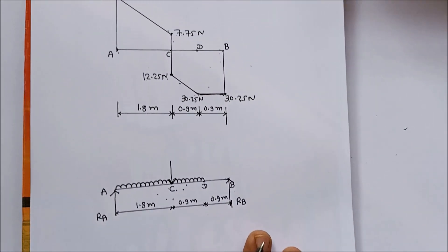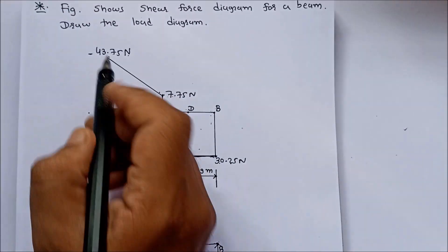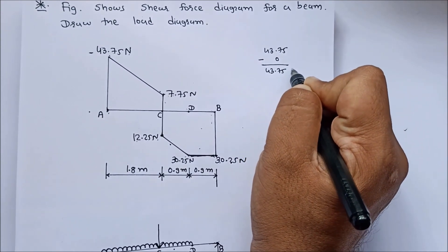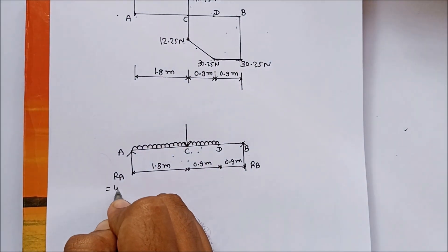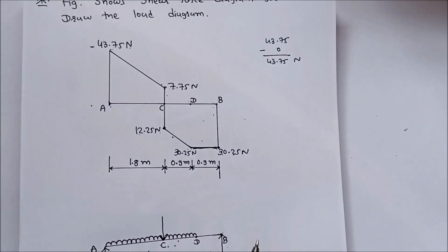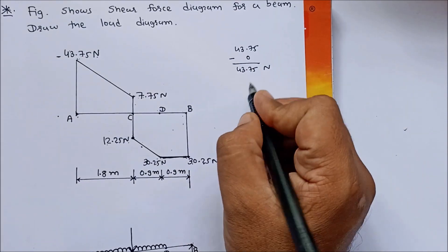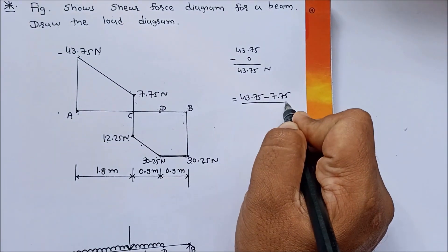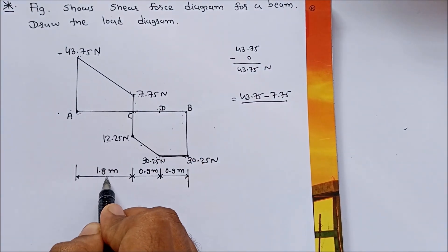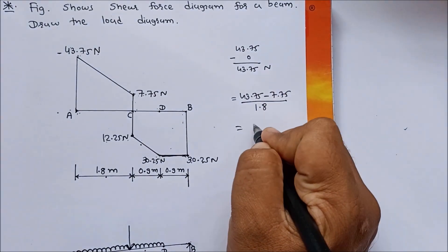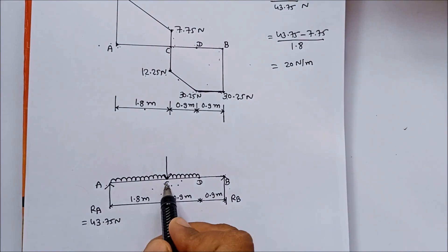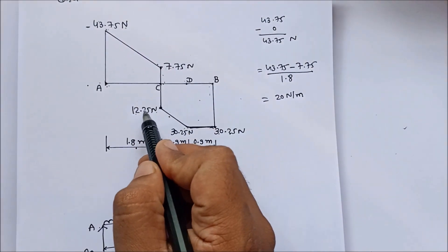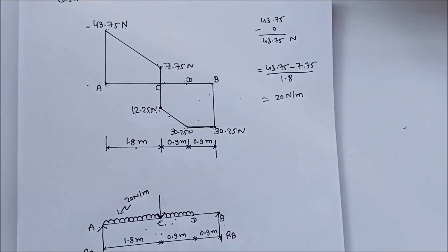How do we calculate support reactions from the shear force diagram? Using final minus initial. At A: final is 43.75 N, initial is 0, so reaction at A equals 43.75 N. For UDL between A and C: left side force is 43.75 N minus right side force of minus 7.75 N, divided by length, giving 20 N per meter. So UDL between A and C is 20 N per meter. The shear force decreases from 7.75 N to minus 12.25 N as a straight line, indicating a point load.